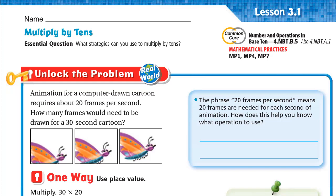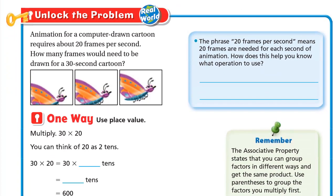Hello, this is Mr. Ahmed and today we'll start Chapter 3, Lesson 3.1: Multiply by Tens. Our essential question is: what strategies can you use to multiply by tens? Let's unlock the problem. A computer drone cartoon requires about 20 frames per second. How many frames would need to be drawn for a 30-second cartoon?